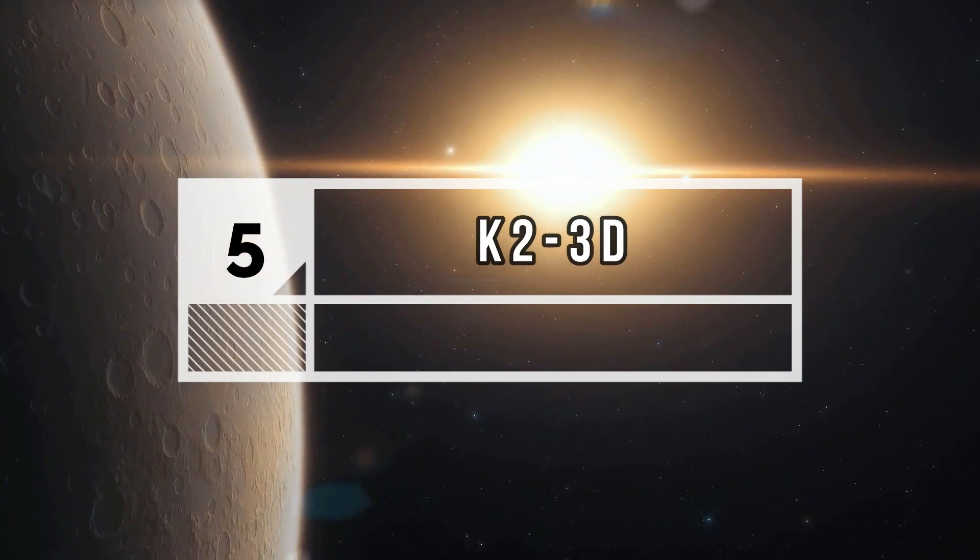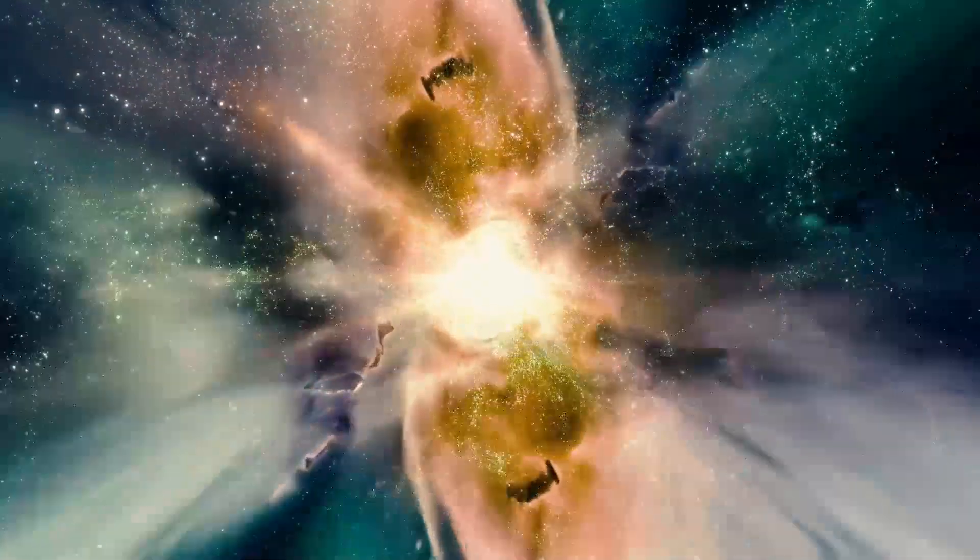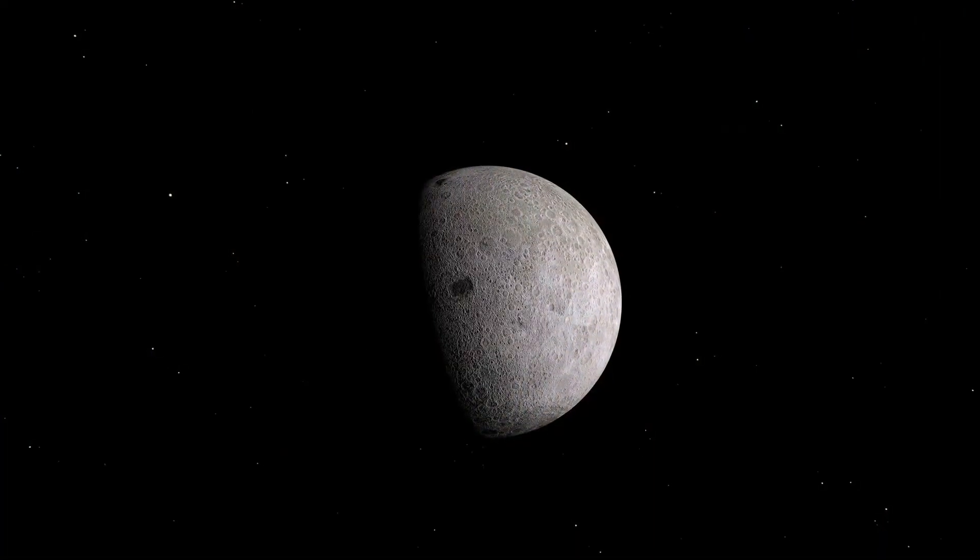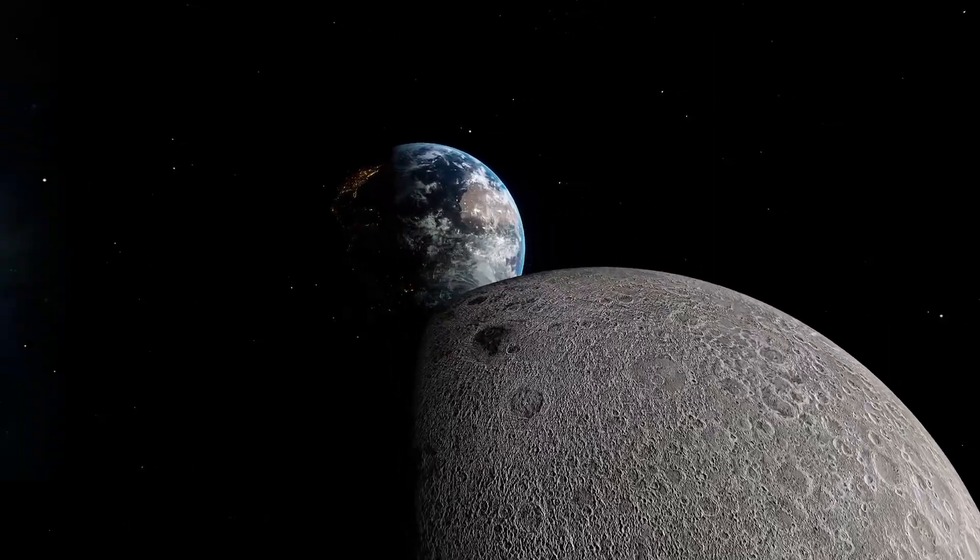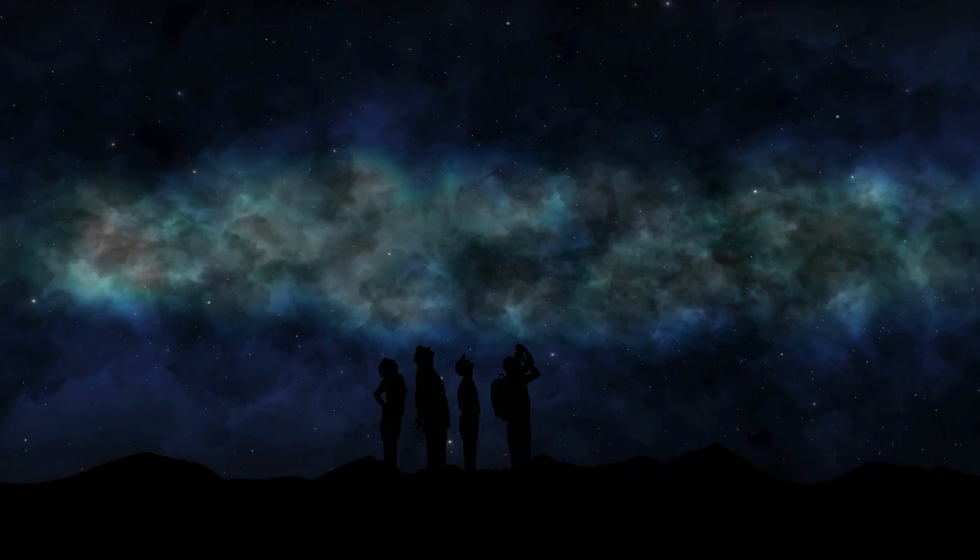Number 5: K2-3d. It is located in Leo constellation, orbiting around a red dwarf star, K2-3. This star is one of the 10 closest stars to the Earth. K2-3d is about 1.5 times larger than the Earth, having a year of 44 days only.